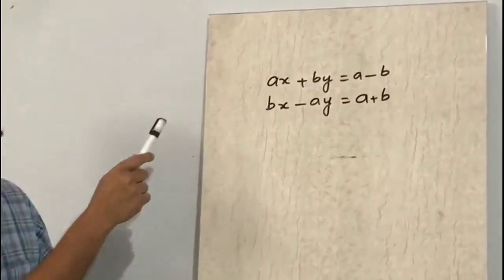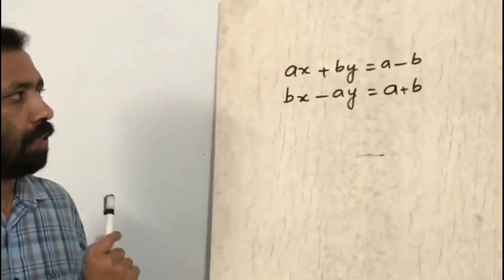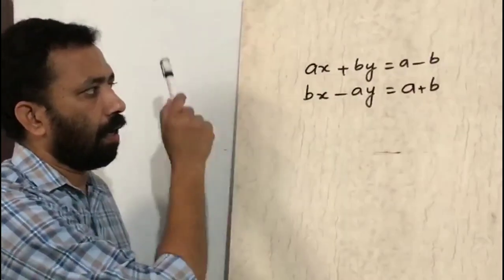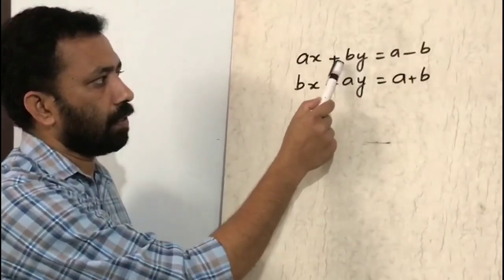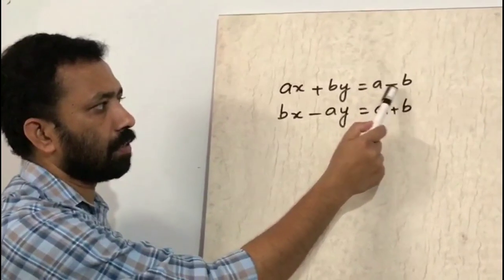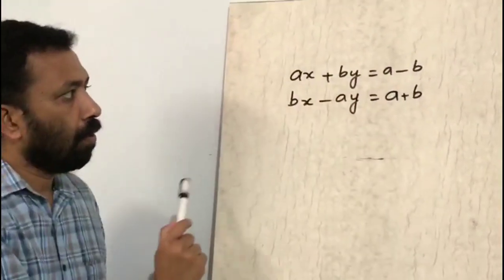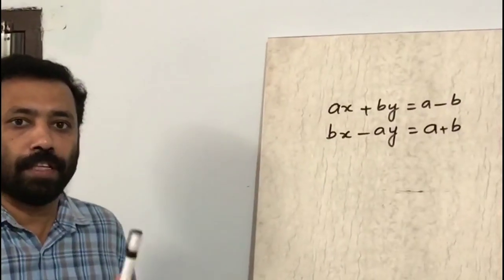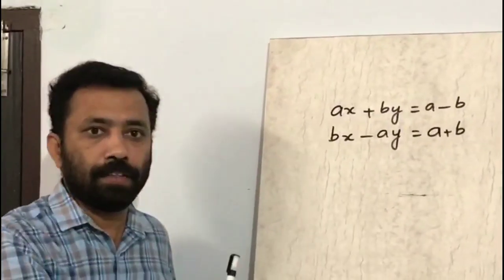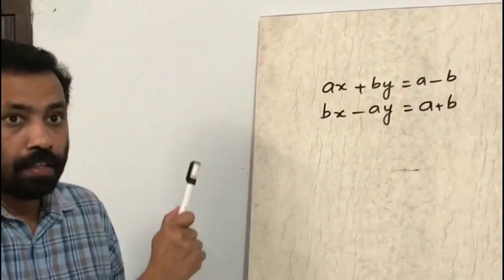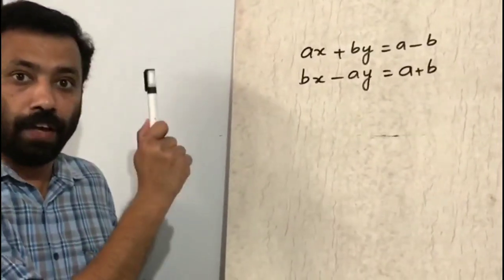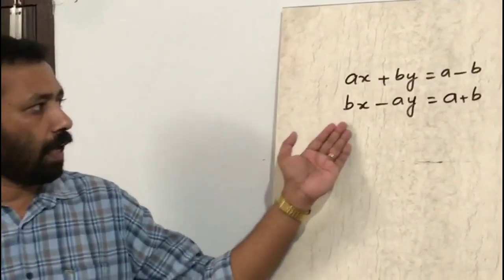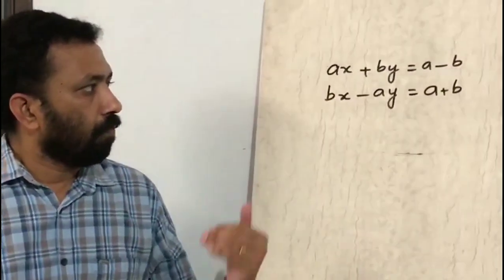What is the specialty of this equation? The coefficient of x in the first equation is 'a', the coefficient of y is 'b', and the constant is a - b. The specialty here is that the coefficients are variables instead of numbers.